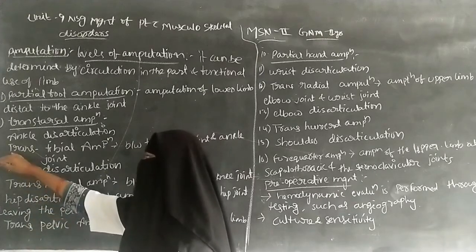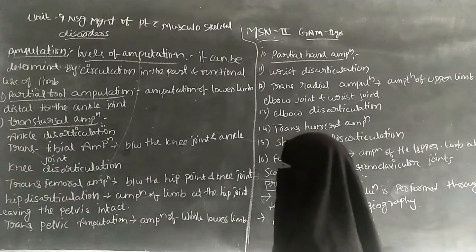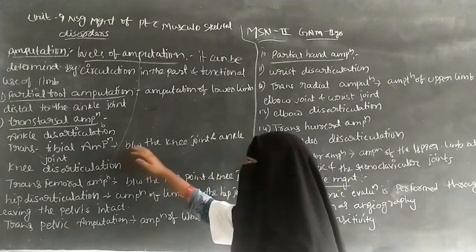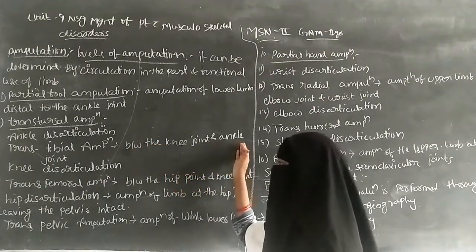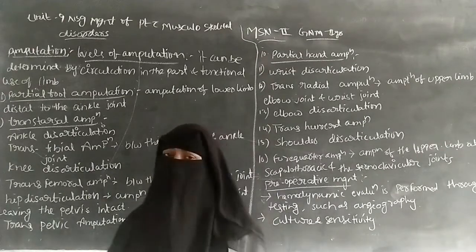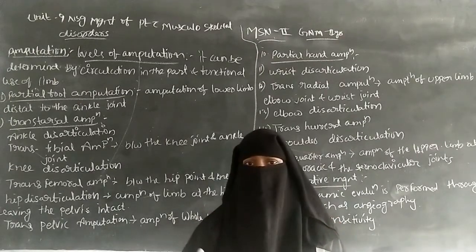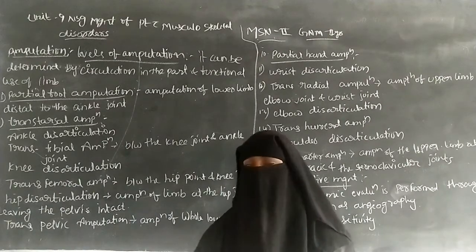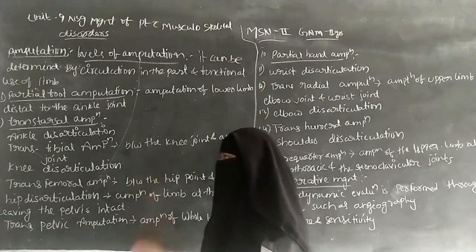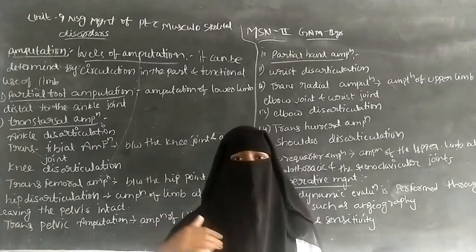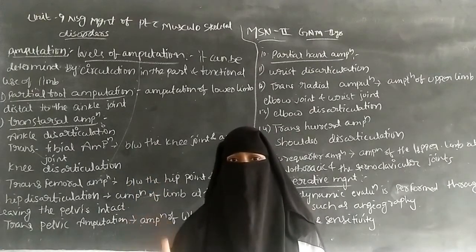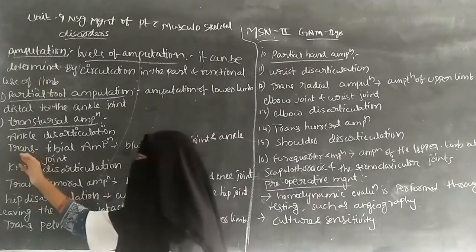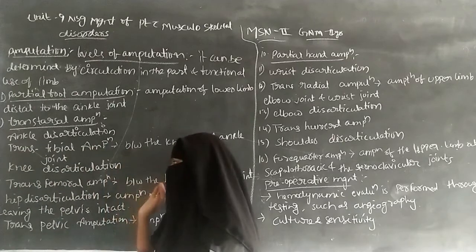The next level is trans-tibial amputation. Trans-tibial amputation is the amputation of the lower limb between the knee joint and the ankle joint. The limb has to be removed from between the knee joint and the ankle joint in trans-tibial amputation.